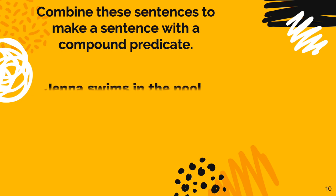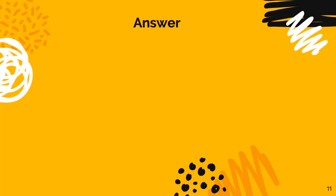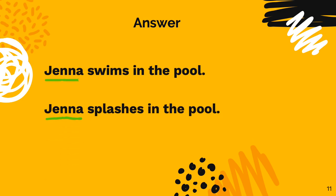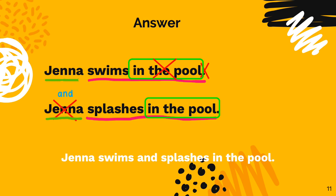Let's practice some more examples: 'Jenna swims in the pool' and 'Jenna splashes in the pool.' Pause this video and combine these sentences to form one sentence with a compound predicate. Jenna is the subject, and 'swims in the pool' and 'splashes in the pool' are the predicates. I will take out the second Jenna and the period after 'pool' and add 'and.' However, I also want to look at the repeated phrase 'in the pool' — I don't want to repeat it twice. So I will eliminate the first instance to form: 'Jenna swims and splashes in the pool.'